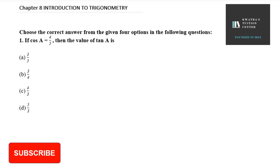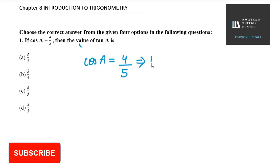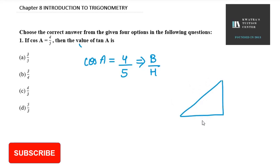The first question says: if cos A is equal to 4 by 5, then the value of tan A is. So the information we have is that cos A equals 4 by 5. And cos is base over hypotenuse — so base and hypotenuse are already mentioned. From this we can find the perpendicular.